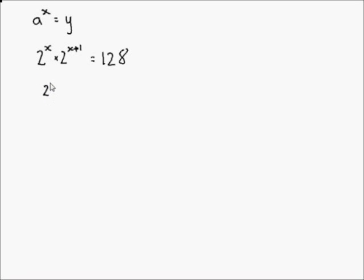So you'll have 2 to the power of 2x plus 1 equals 128. It's because you're multiplying the same base with similar powers, and the x's just add together to get 2, then plus the 1. And now it's just a simple exponential equation, just log both sides.